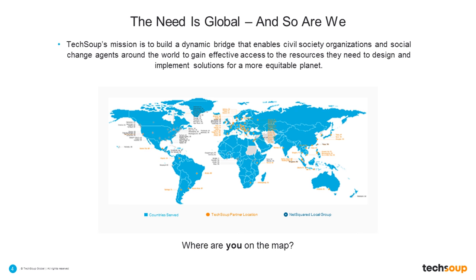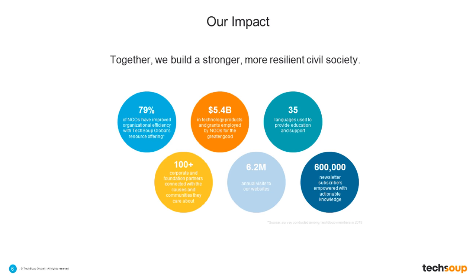We're a 501(c)(3) nonprofit like many of you joining us today, and we work to empower organizations around the world to help them get the latest tools, skills, and resources to achieve their mission. You can see from our map that we serve almost every country in the world, with about 62 partner NGOs globally. A little bit about our impact: we've helped organizations get more than $5.4 billion in technology products and grants, from more than 100 corporate and foundation partners. I'm going to turn the presentation over to Karen, who will talk about tactical technology planning.